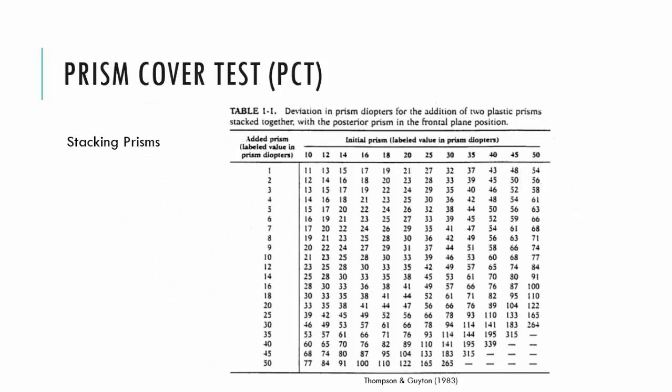Now, one of the issues we have with prisms is that the sets that we have in our clinics usually only go up to about 45 or 50 diopters, which is about 25 degrees. There are, however, obviously eye turns that are larger than this. What do we do when we have a patient where you've reached the end of your prism bar and the patient is still uncorrected?